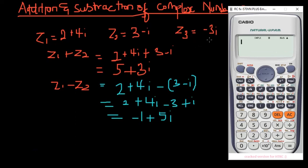Let's say we now compute z2 minus z3. We have three minus i, minus open bracket negative three i, close bracket. Enter that in and there we go — you get your answer.